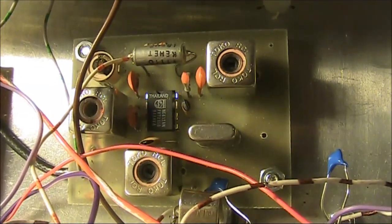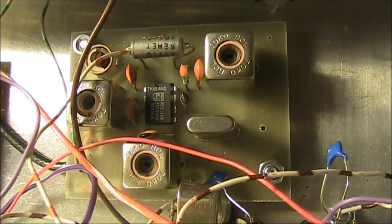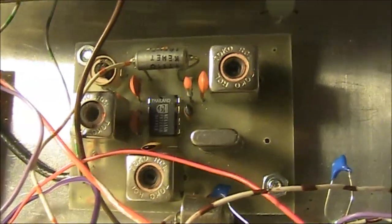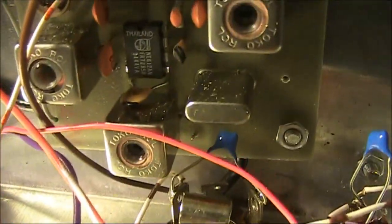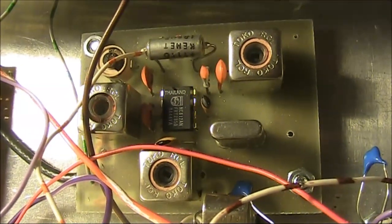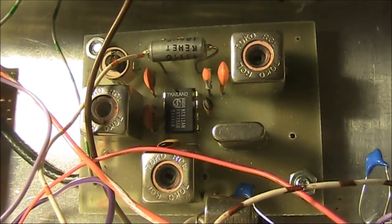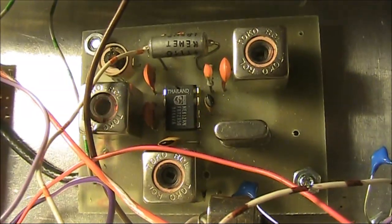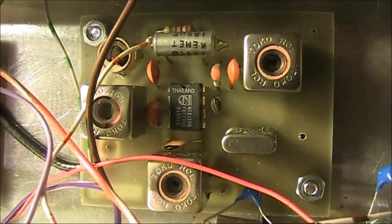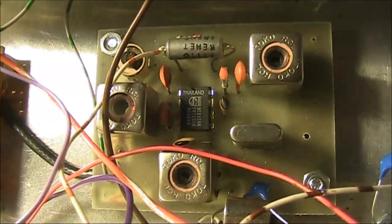The receiver board just contains one IC, an NE602. And the crystal, can't easily see the frequency, but I'm guessing it's 22 MHz to convert 50 down to 28. So we've got a self-contained converter for the receive.